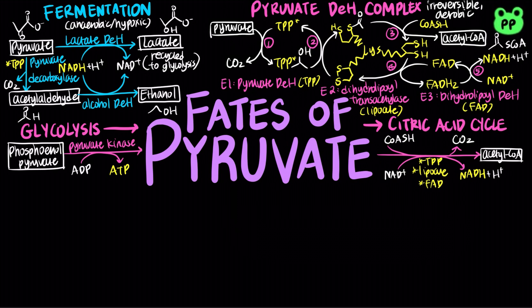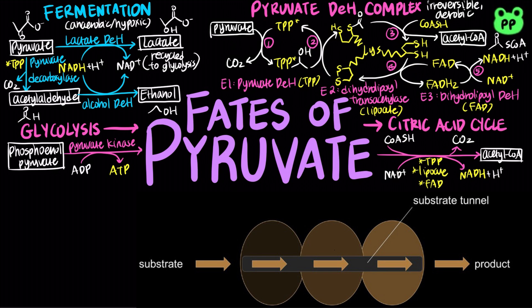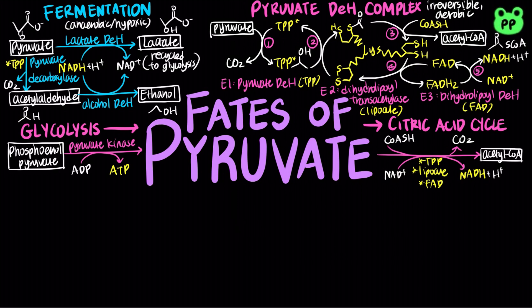The pyruvate dehydrogenase complex is an example of substrate channeling, in which intermediates of a multi-step sequence never leave the complex. The product acetyl-CoA then enters the citric acid cycle. The pyruvate dehydrogenase complex is inhibited under a high-energy state through allosteric inhibition by ATP, acetyl-CoA, NADH, and fatty acids, and it is activated under a low-energy state by AMP, coenzyme A, NAD+, and calcium cations.